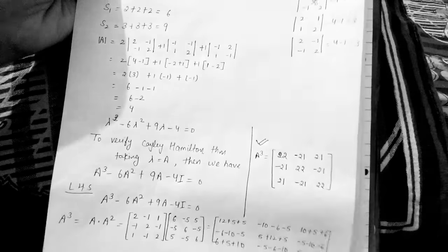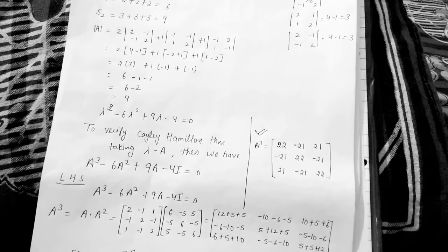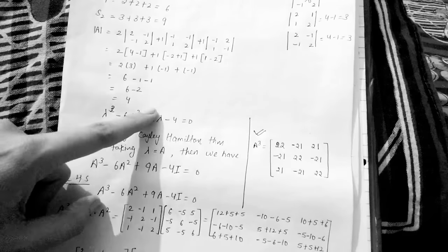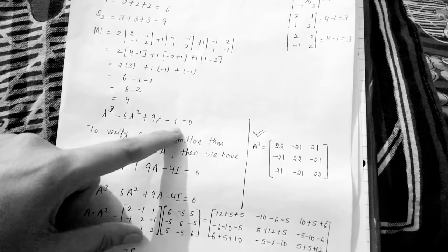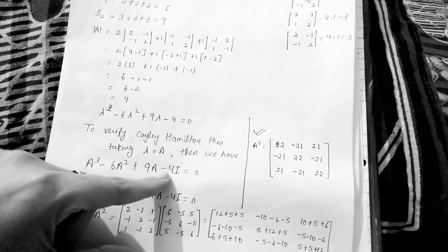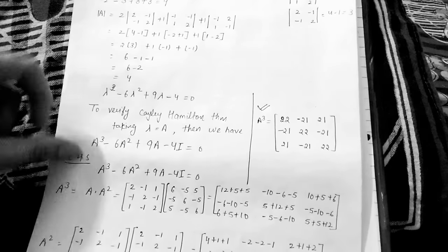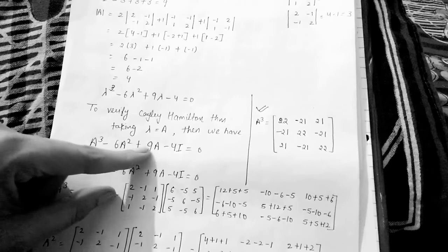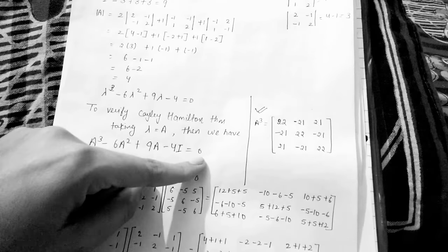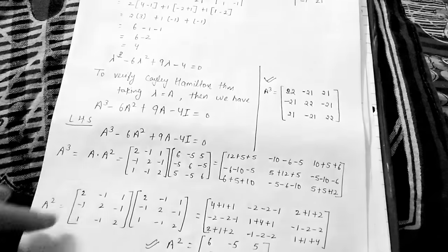Now I'm going to verify the Cayley-Hamilton theorem. To verify it, we replace λ with the given matrix A in the characteristic equation. So we put: A³ - 6A² + 9A - 4I = 0. Note that the constant 4 must be multiplied by the identity matrix I to keep it in matrix form. First, I need to find A² by multiplying A into A, giving us the value of A².